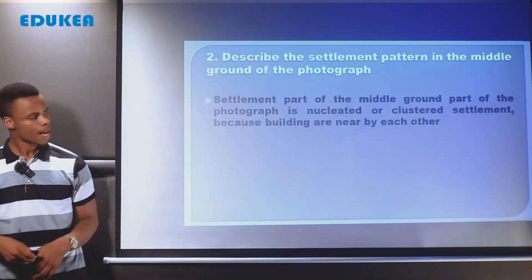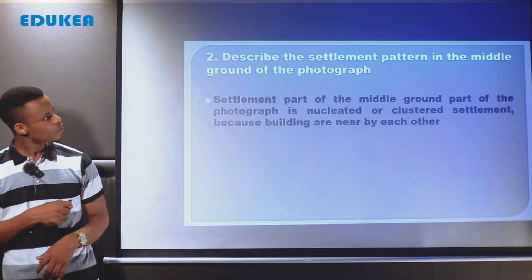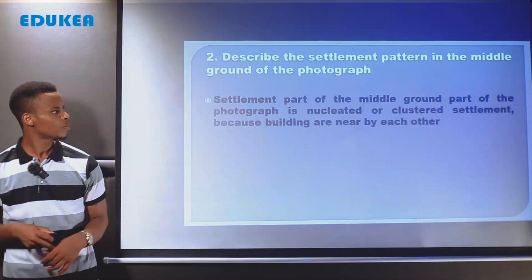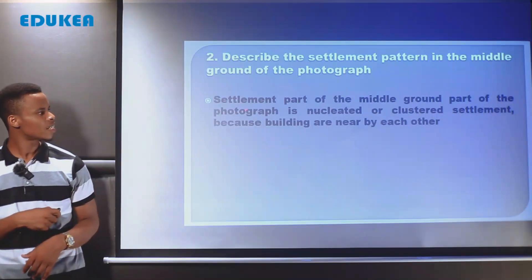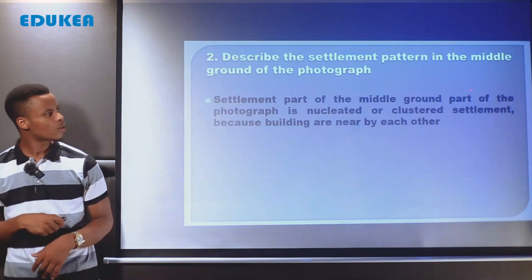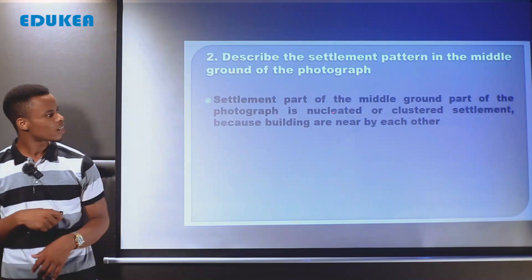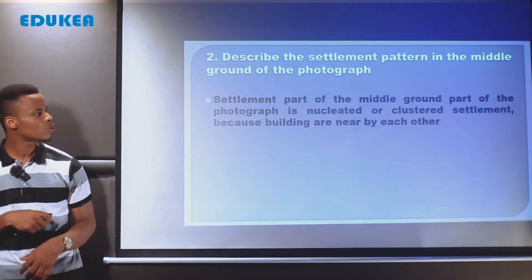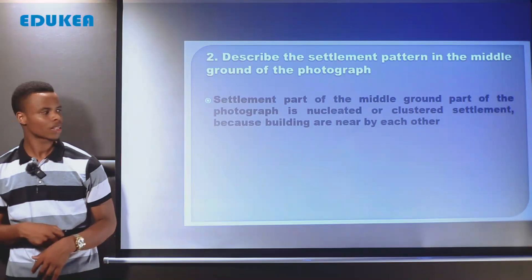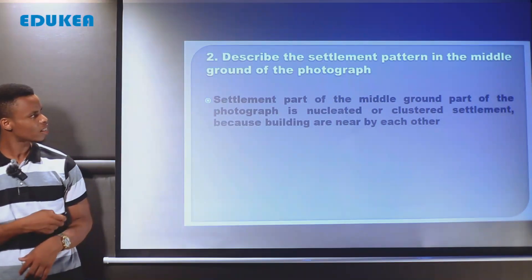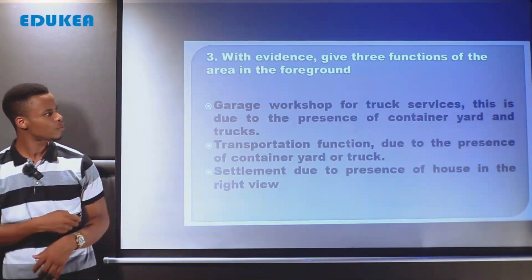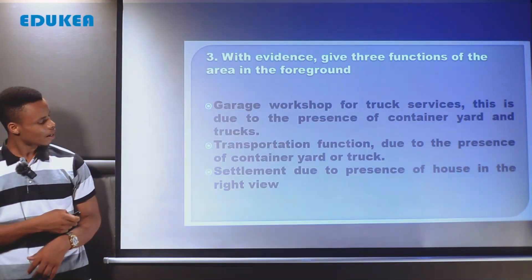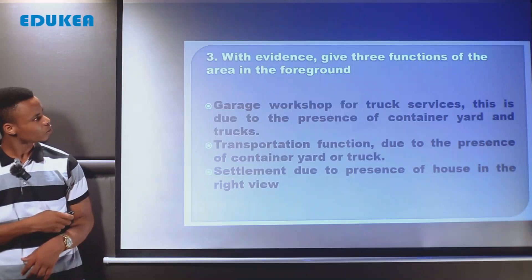The second question asks to describe the settlement pattern in the middle ground of the photograph. After interpreting the photograph, the settlement pattern of the middle ground part of the photograph is nucleated or clustered settlement — nucleated or clustered settlement because buildings are nearby each other. Now let us observe the settlement pattern at the middle ground of our photo.